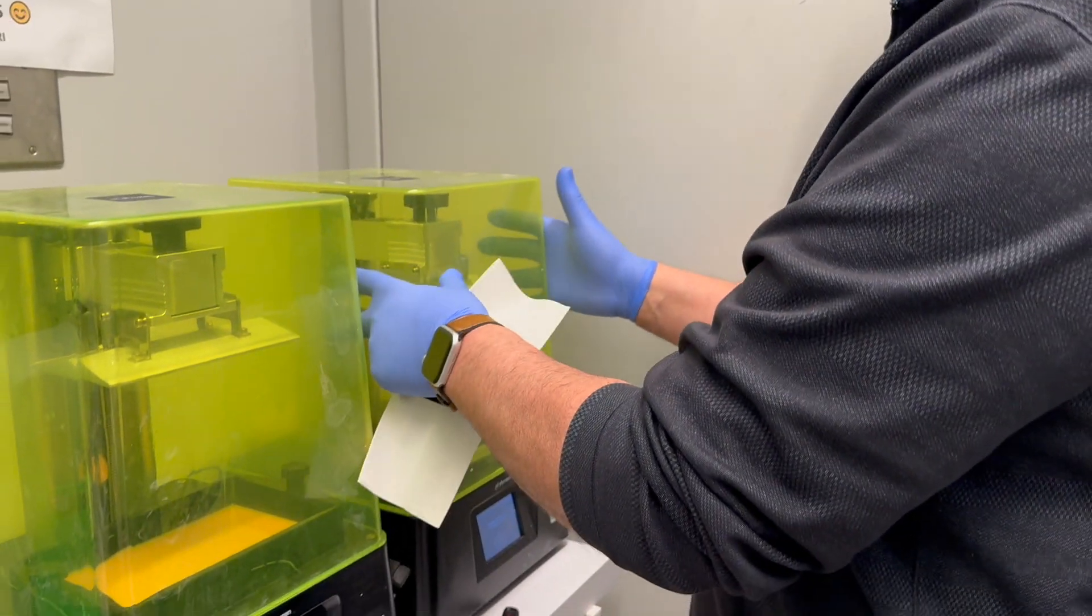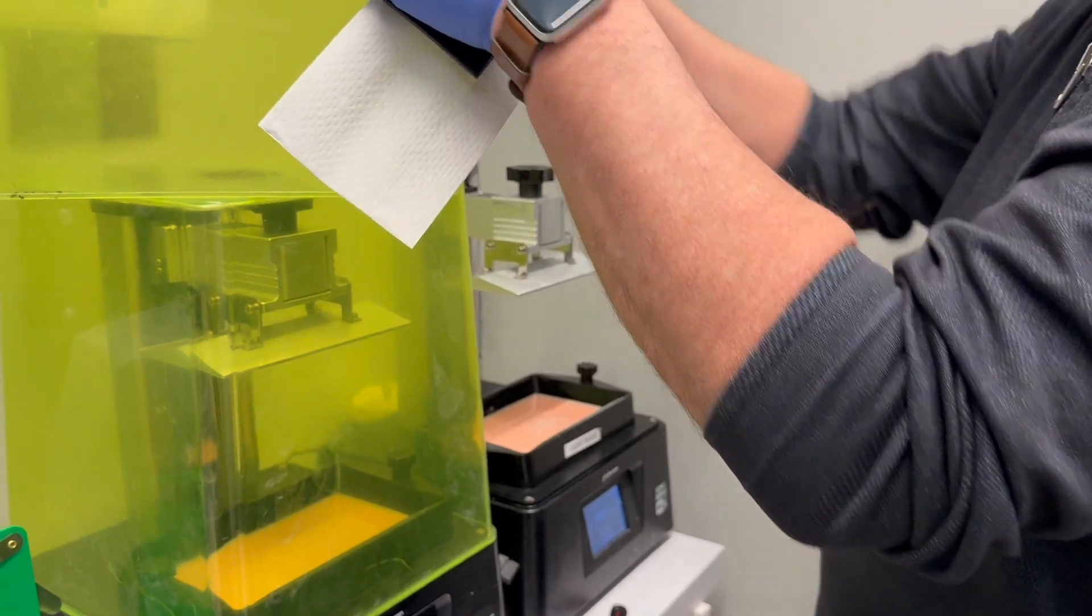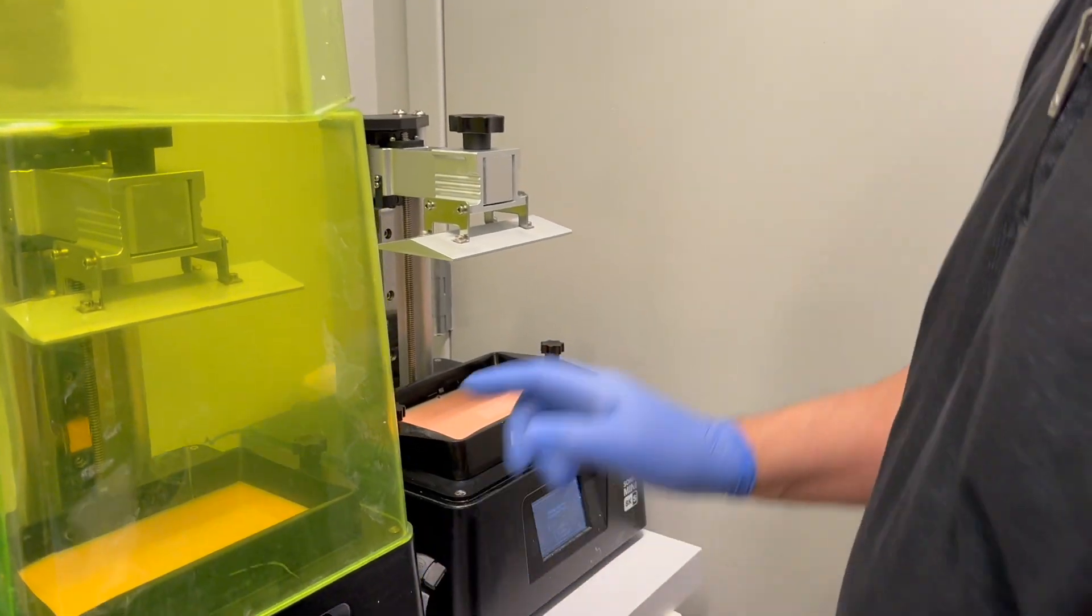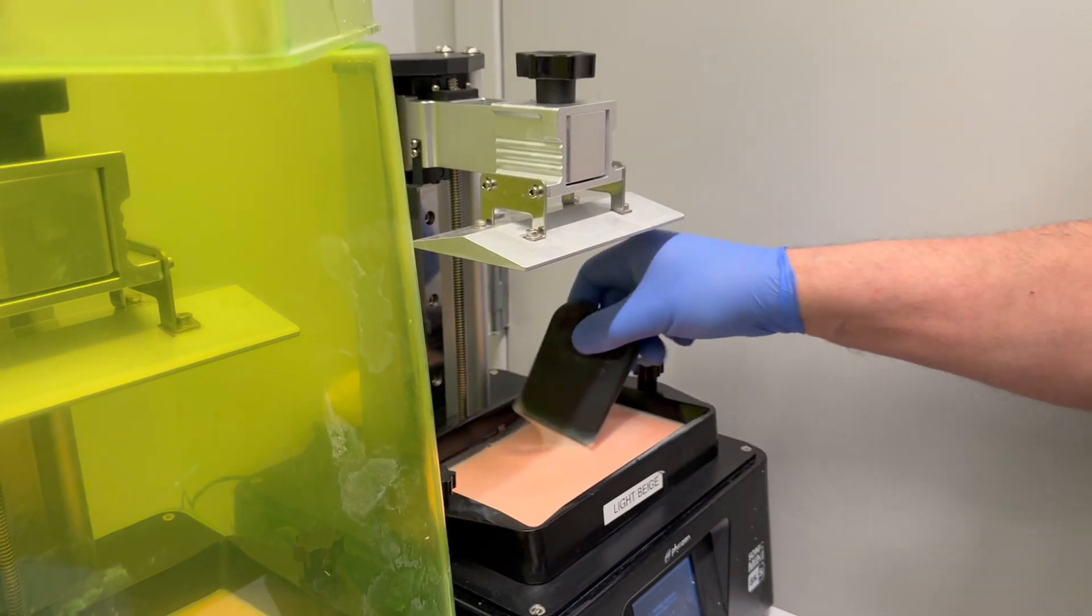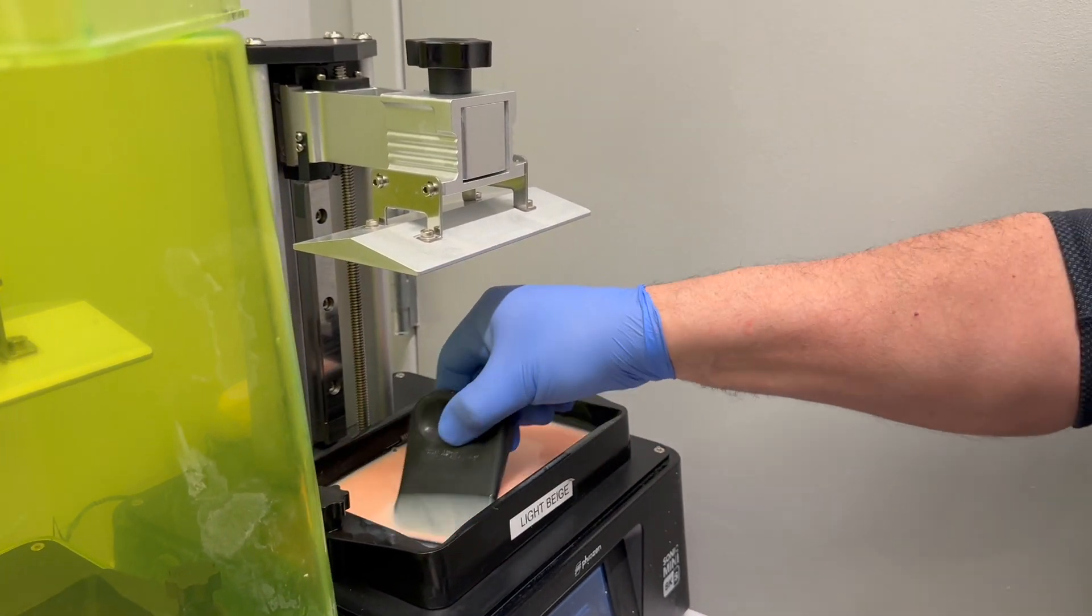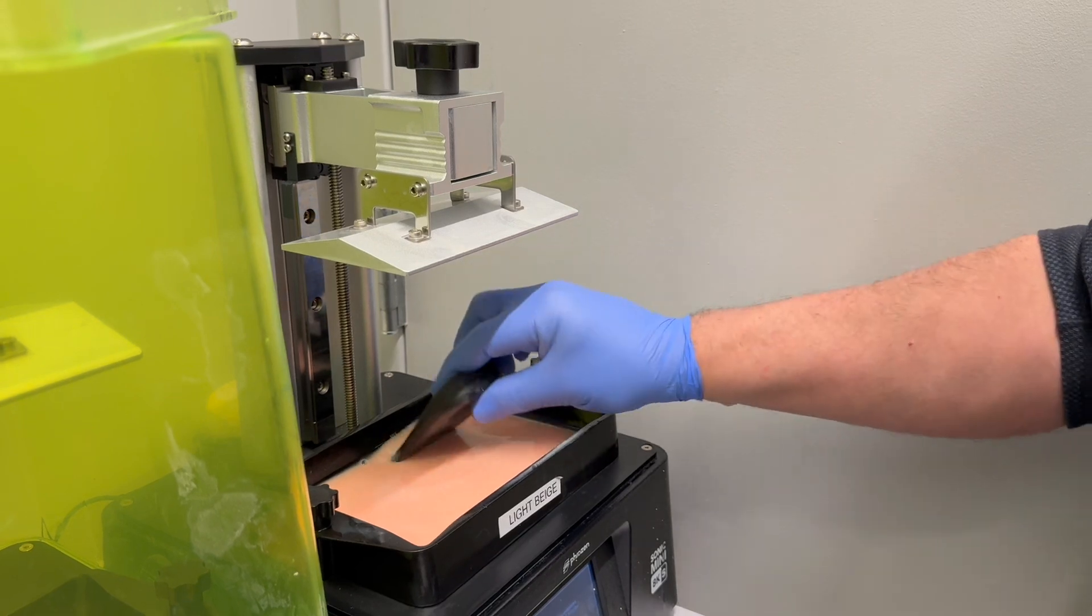Okay, to start a print, the first thing we want to do is stir up our resin because it's been sitting overnight and we want to make sure that it has not settled. So we stir that up a little bit.